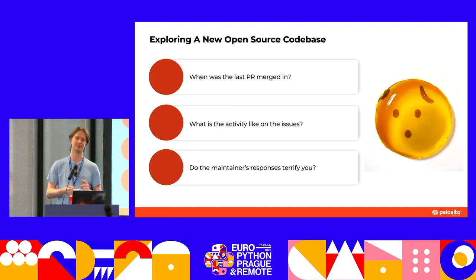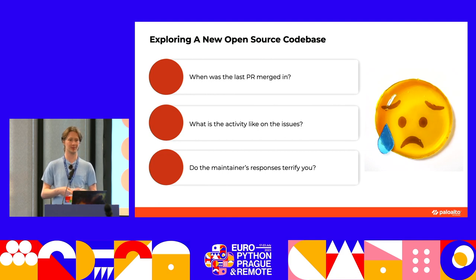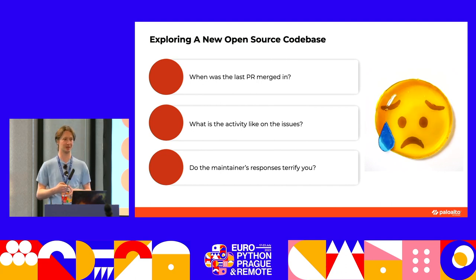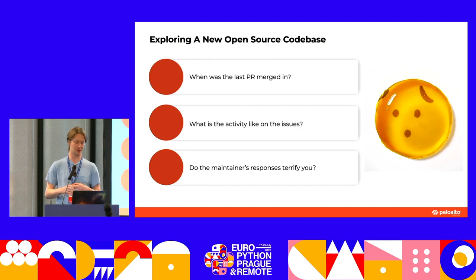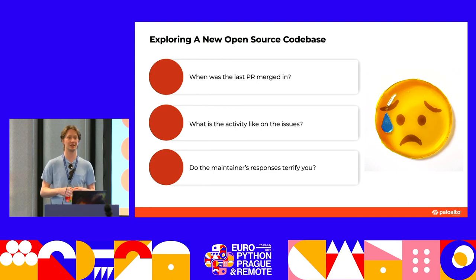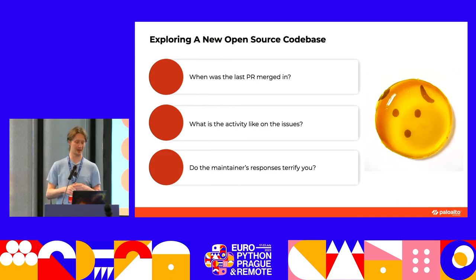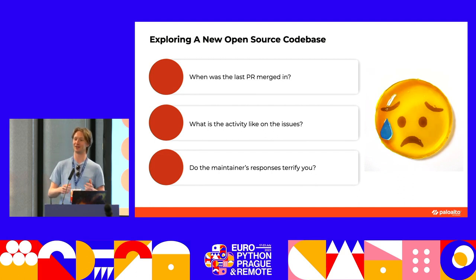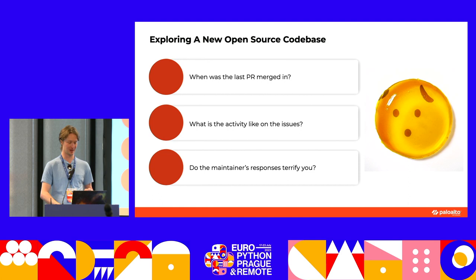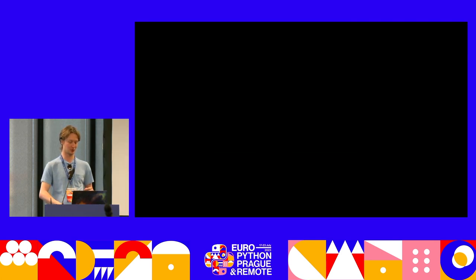So this is my checklist. The first thing I would check is when was the most recent commit — hopefully it was a merge commit, where someone merged in a pull request from someone else rather than just the maintainer adding their own code. I also like to see what the activity is like on the issues and get a sense of what's happening with the library. And on some repos, I've seen really frightening responses from maintainers, and I think life's too short. These are things worth checking before you make an open source contribution.